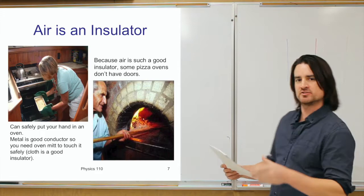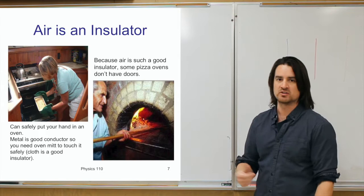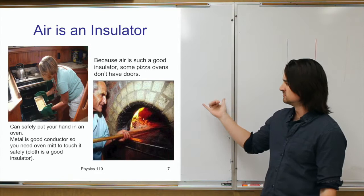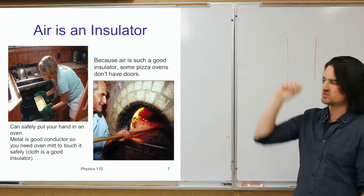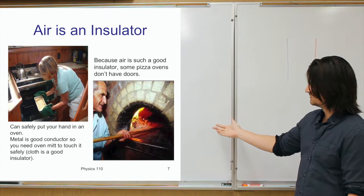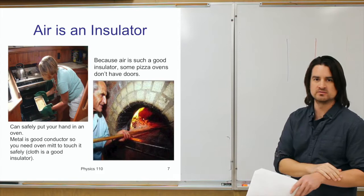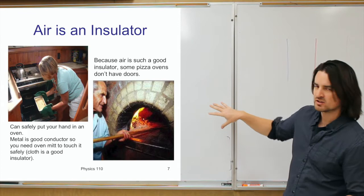Things that do not conduct heat very well we call insulators. Air, as I pointed out before, is a very good insulator. You can see this with pizza ovens — it's extremely hot inside, 500 to 600 degrees, but a lot of them don't even have doors. The reason is that air is a very good insulator. Heat doesn't travel through it very well, so even though it might be warm right at the opening, it's actually not very warm if you're a foot or two away.